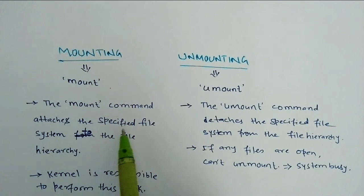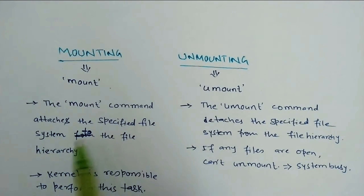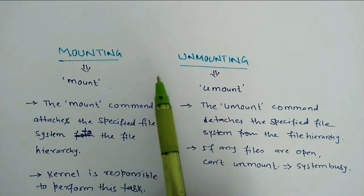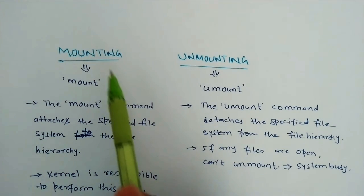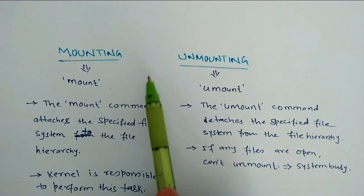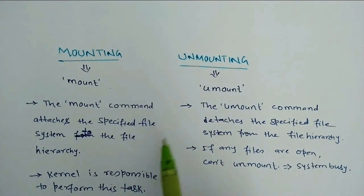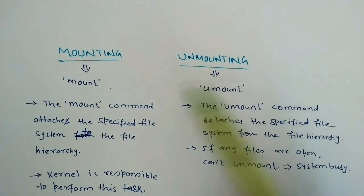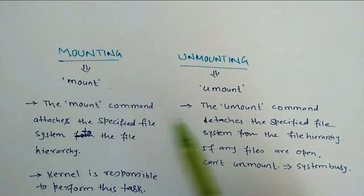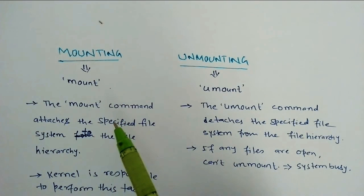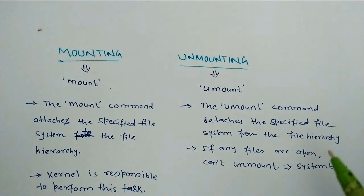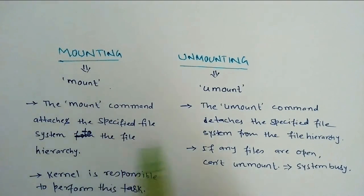The mount command attaches the specified file system to the file hierarchy. Suppose that in a particular directory there are n number of files — mounting will generate a tree kind of structure and link them to each other, that is the hierarchy structure. Unmounting is just the reverse process: mounting attaches the file and unmounting detaches the file. This is the basic difference between mounting and unmounting.